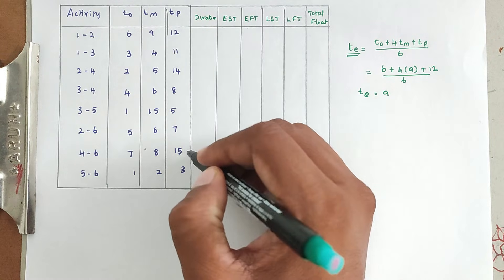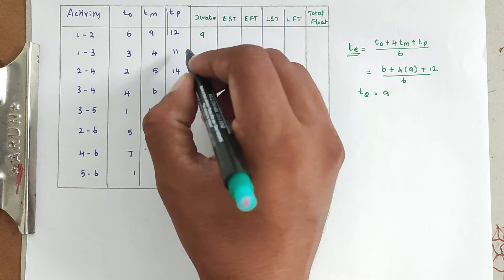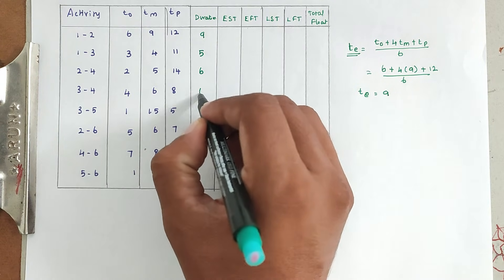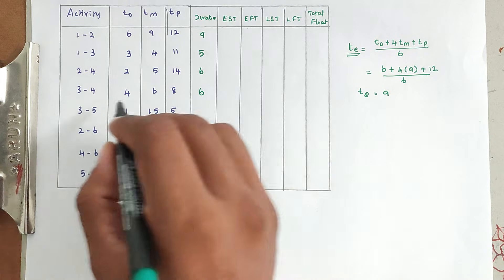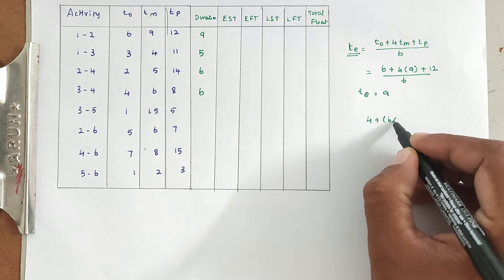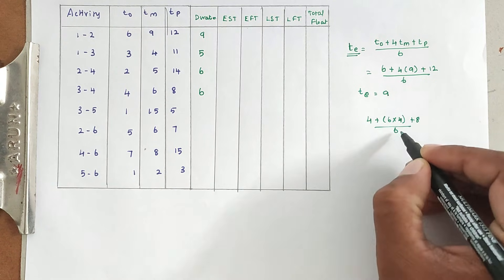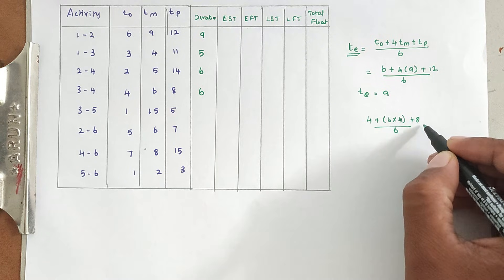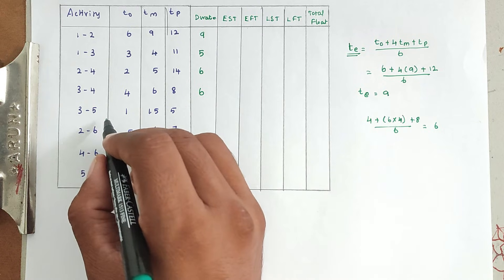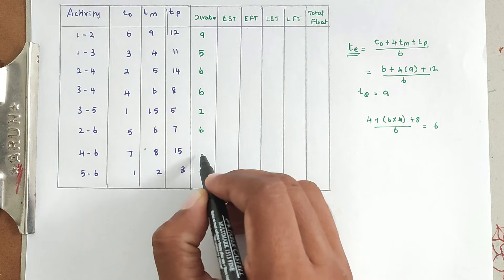The durations for each activity are as follows: activity 1-2 is 9, activity 1-3 is 5, activity 2-4 is 6, activity 3-4 is 6. For activity 3-4, as an example: (4 + 6×4 + 8) / 6 = 6. Activity 3-5 duration is 2, activity 2-6 duration is 6, activity 4-6 duration is 9, and activity 5-6 duration is 2.